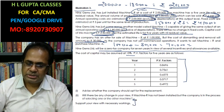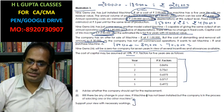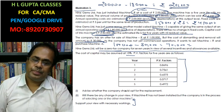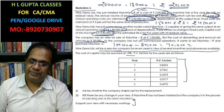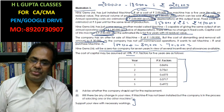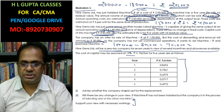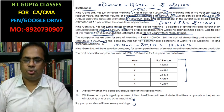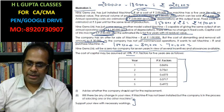If Machine R is not installed, in that case you will have to calculate the net present value of each machine separately, and whichever has the higher net present value, that machine should be accepted.